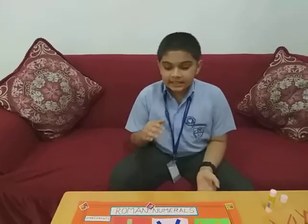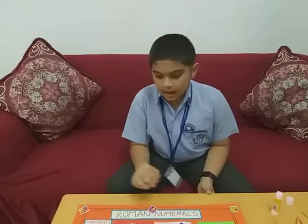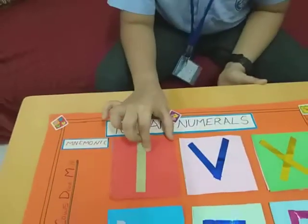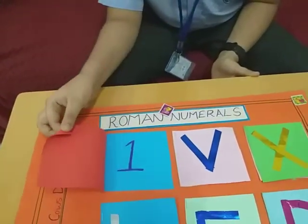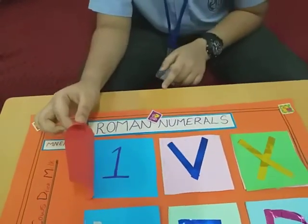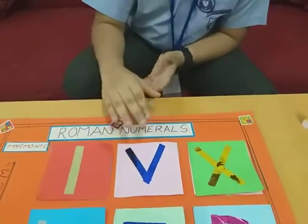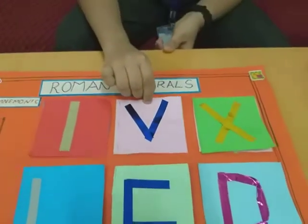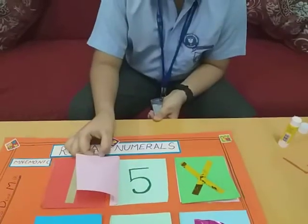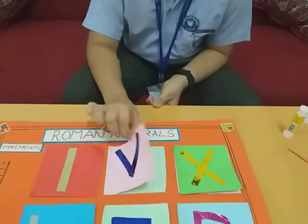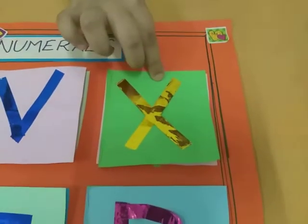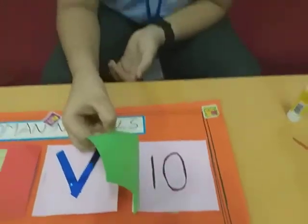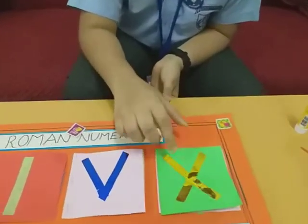Let's look at what each letter represents. The first letter is I — what does it represent? It's 1. I represents 1. Next we move on to letter V — what does it represent? It represents 5. V equals 5. The next letter is X — what does it represent? It's 10. X represents 10.